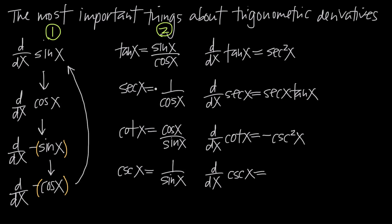I've written the derivatives of tangent, secant, cotangent, and cosecant here. If you can memorize these derivatives, when you see tangent of x you can immediately say that's secant squared of x and move on. But if you can't memorize them, you can always use the fact that tangent equals sine over cosine to derive that the derivative of tangent is secant squared, using quotient rule.